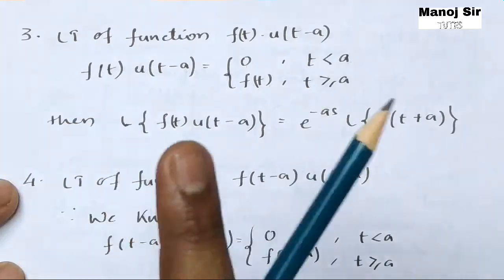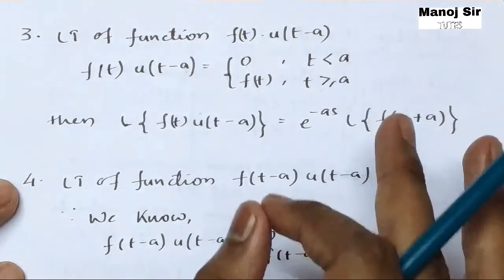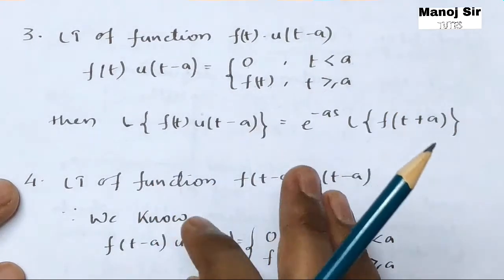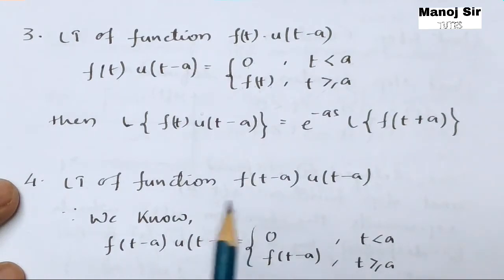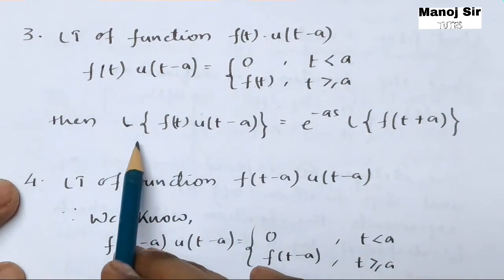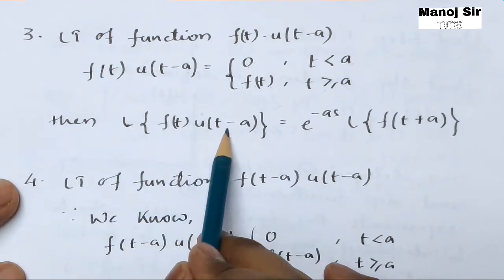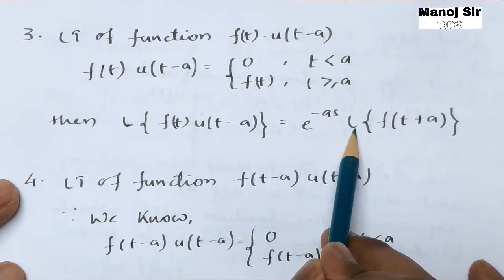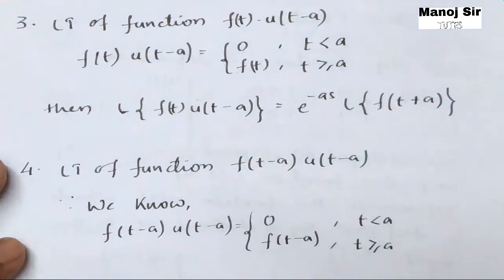Formulas from the first, second, and third parts are all very very important, as these three formulas are very helpful while solving problems on this topic. To repeat: the Laplace transform of f(t) into u(t minus a) equals e to the power minus a s into the Laplace transform of f(t plus a).